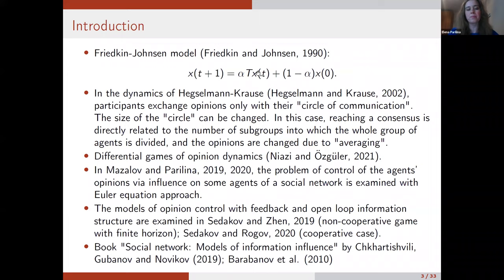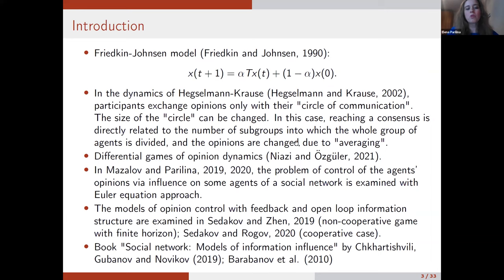Another type of linear dynamics was proposed by Hegselmann and Krause — the first paper published in 2002. Participants exchange opinions only with their circle of communication, and the size of this circle can change over time. In this model, reaching consensus is directly related to the number of subgroups into which the whole society is divided. Opinions converge within each subgroup.